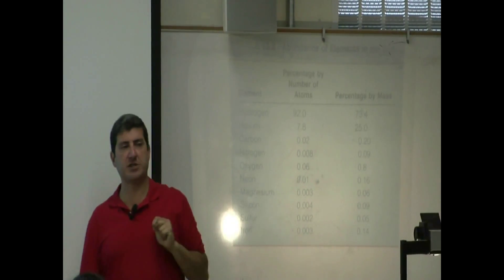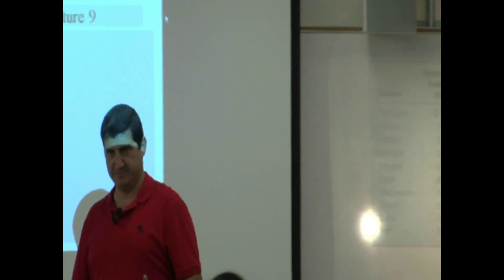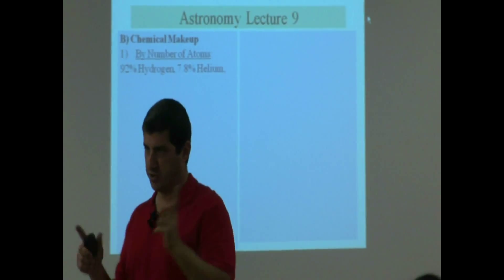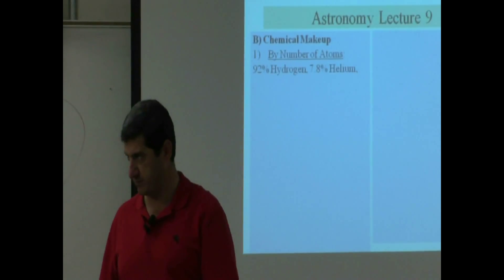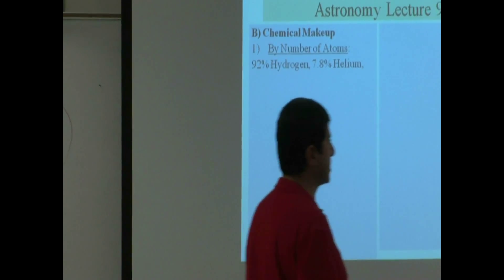Second most abundant element in the universe, helium. It's also the second most abundant element in the sun. 7.8% of the sun is helium.